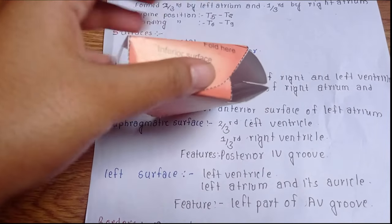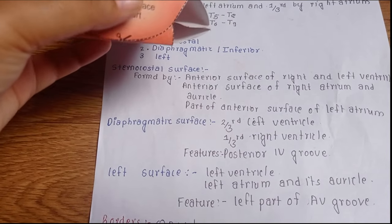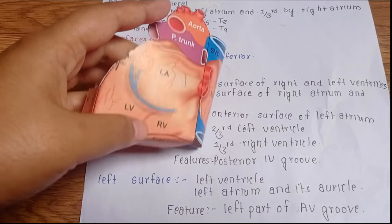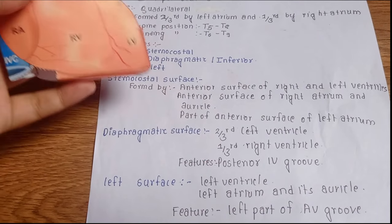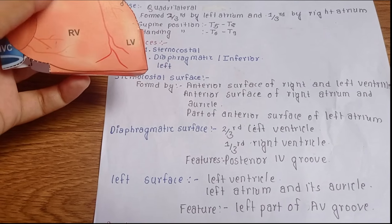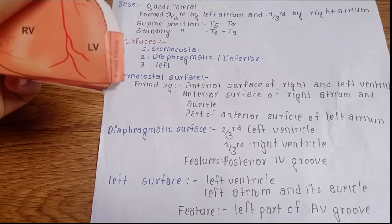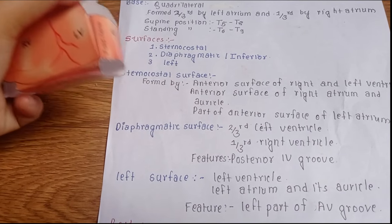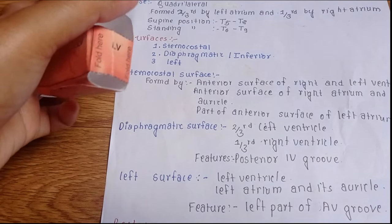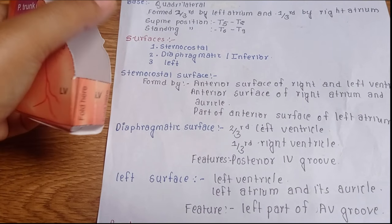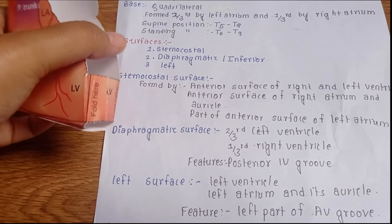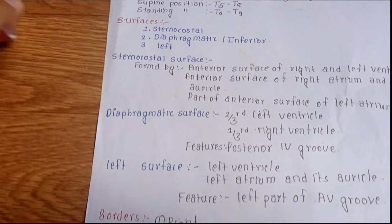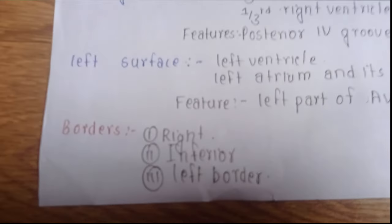The left surface lodges the left part of the atrioventricular groove. Here we can see: this one is the inferior surface or the diaphragmatic surface of the heart, this one is the sternocostal surface of the heart, and what is missing here is the left surface of the heart.